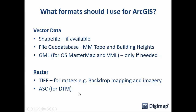For raster data, the easiest format is TIFF — good for backdrop maps and imagery. For DTMs and some other products, there's ASC (ASCII text file), which ArcGIS can also read fine. There are a couple of datasets still only available in GML, such as network datasets, but if you're building a road network that's probably the best starting point anyway.